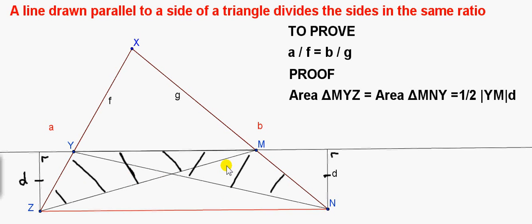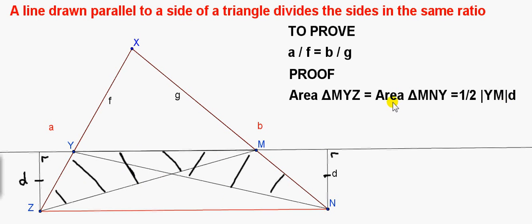So, looking at these two shaded triangles: they share the same base, Y, M, and the same perpendicular height, D, because they lie between two parallel lines. Since the area is given by half the base times the height, the areas of both triangles are equal.